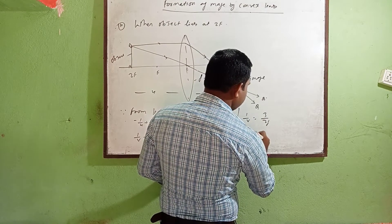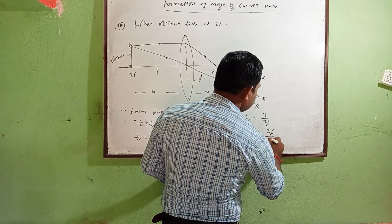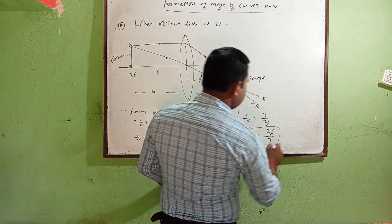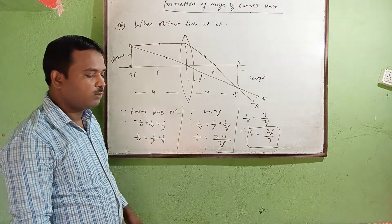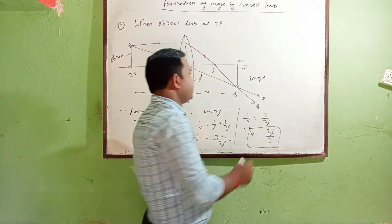Therefore v = 2f/3. So this will be the relation when the object lies at 2f. You will write their nature.